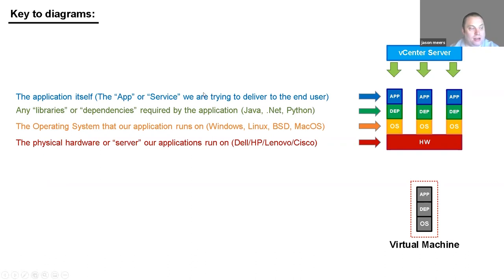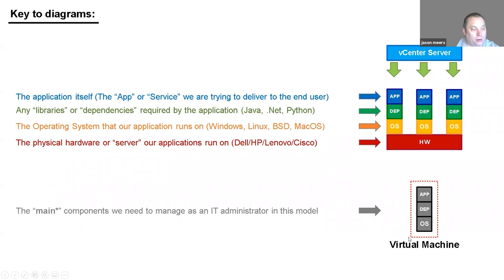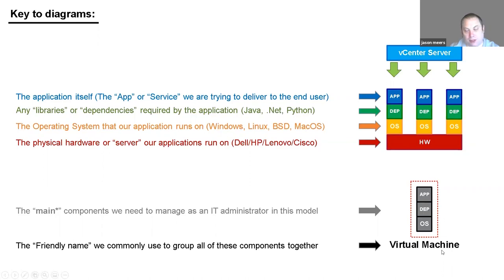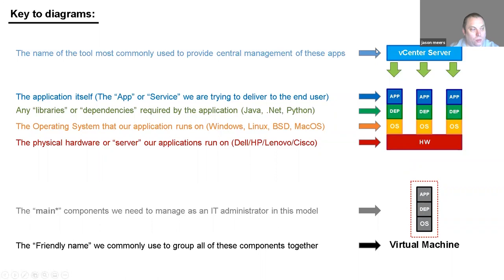Then there's the application itself — the app or service we're delivering to the end user. When we have an OS, a dependency, and an app together we put a box around that and call it a virtual machine. We'll also explain what tool provides central management for this kind of environment. This slide is just showing what all the colored blocks mean.